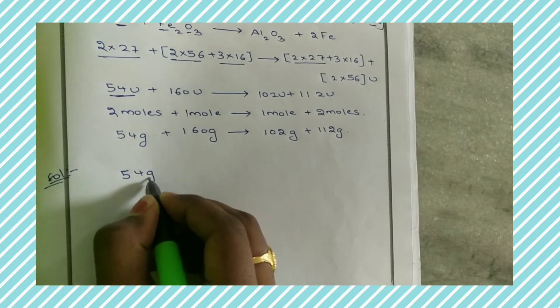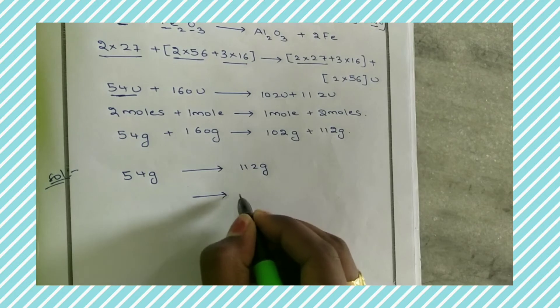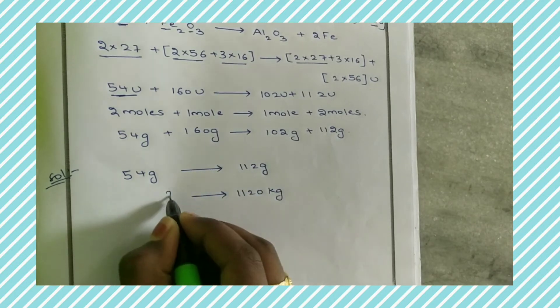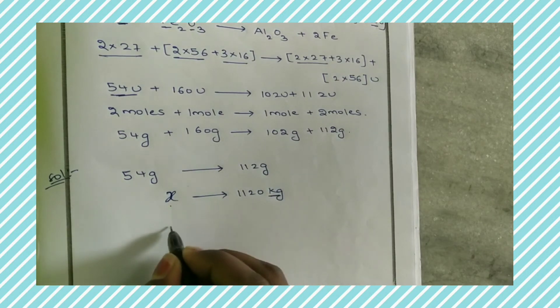It is given that 54 grams equals 112 grams of iron. Now how many grams of Aluminum is equal to 1120 kilograms of iron? So let Aluminum be X.